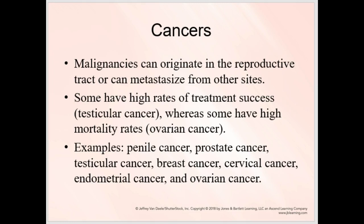Cancers are malignancies. These will spread to the surrounding tissues and metastasize to and from other sites. Some have a high rate of treatment success — we're going to talk about testicular and prostate. Some have high rates of mortality, and ovarian cancer falls into that group, quite often because the diagnosis is missed. The signs and symptoms are a bit obscure — generalized bloating and discomfort in the abdomen in the early stages, so it can be overlooked.